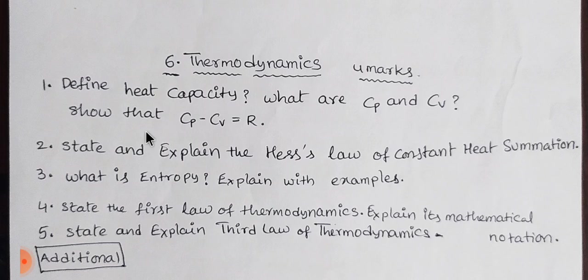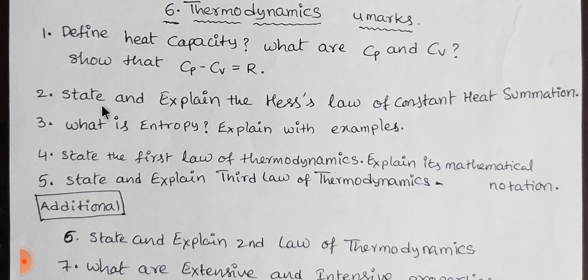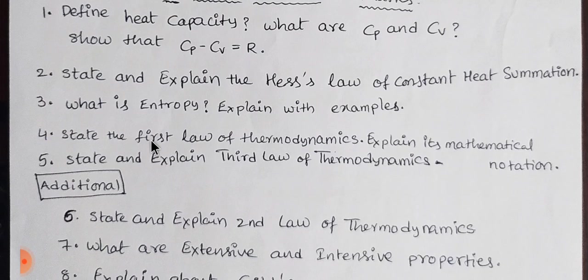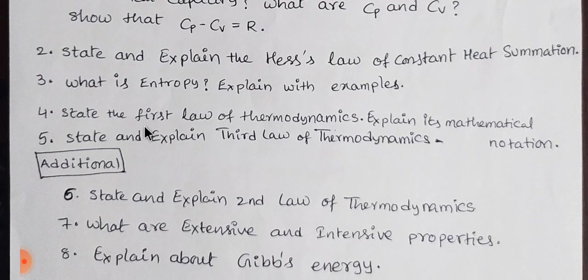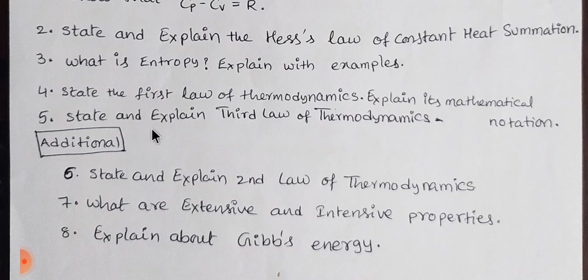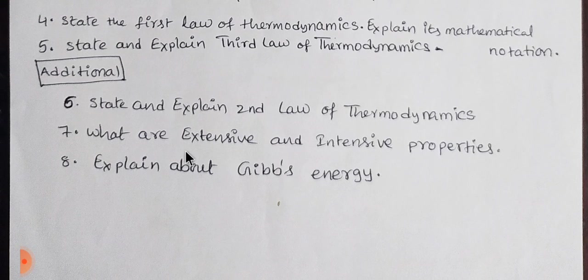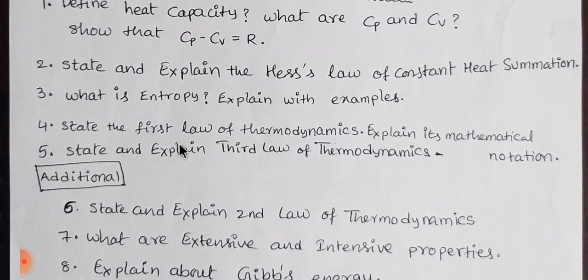This is a maximum of 4 marks. The first one is heat capacity, and Cp minus Cv equals R. Next, state and explain Hess's law of constant heat summation. Next, entropy. Next, the first law of thermodynamics. Next, the third law of thermodynamics, and the second law of thermodynamics, extensive and intensive properties, and Gibbs energy. The first five topics are complete.